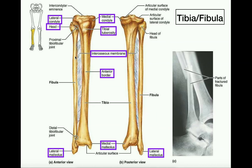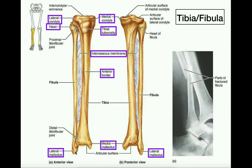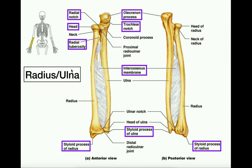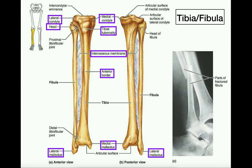Now let's look at the fibula, which is always the lateral bone of these two. The fibula is a very thin bone. The side that is proximal in the body is going to be the head of the fibula. Going down to the bottom, we have something analogous to the styloid processes we saw on the radius and the ulna. They're called something different in the tibia and fibula, and they're slightly different.